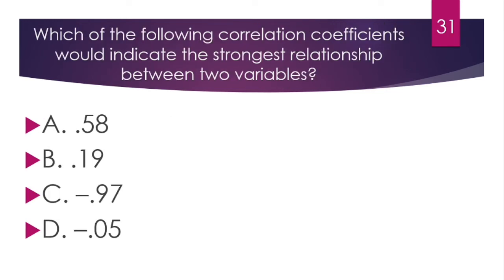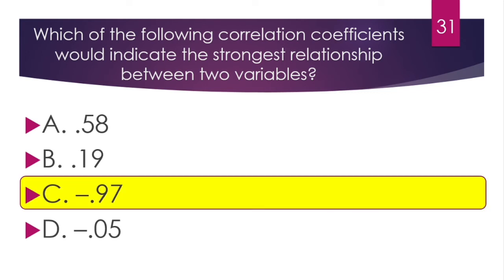Question number 31. Which of the following correlation coefficients would indicate the strongest relationship between two variables? The answer closest to +1 or −1 indicates the strongest relationship. The correct answer is −0.85, as it is closest to −1 and therefore represents the strongest relationship, even though it is negative.